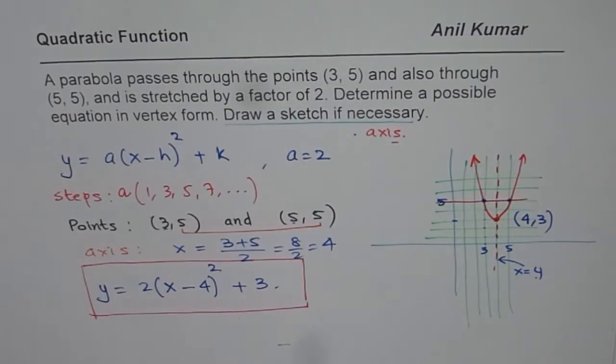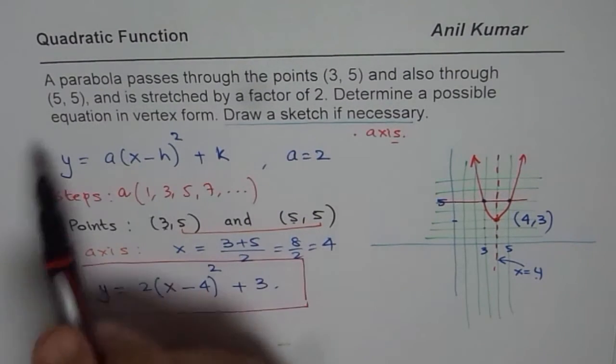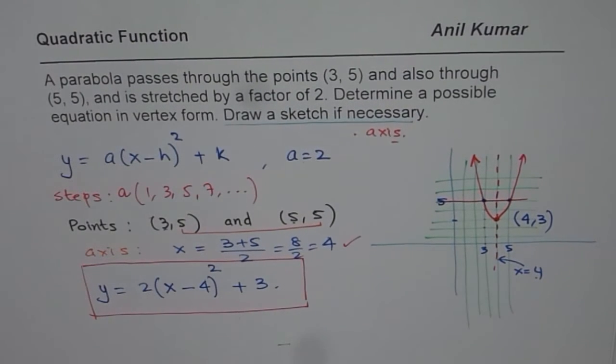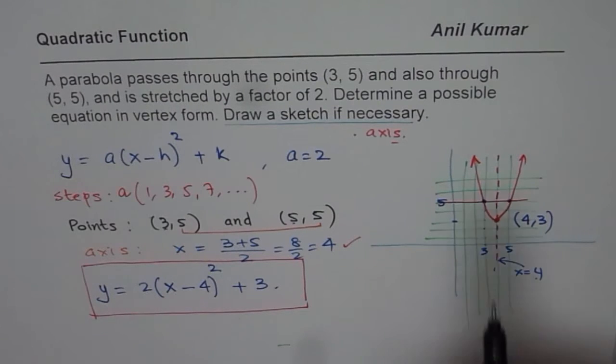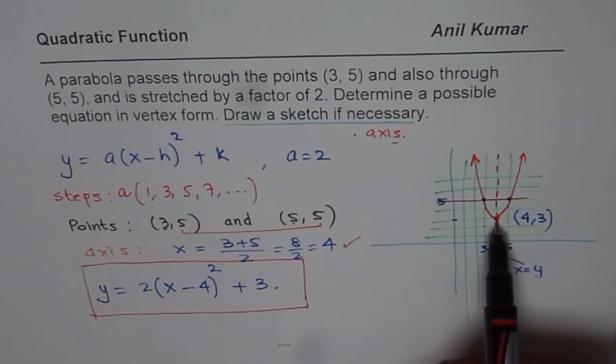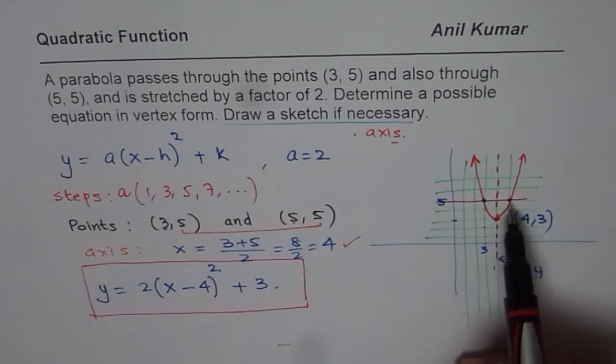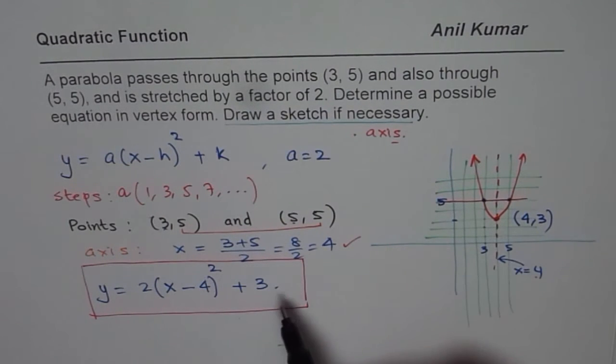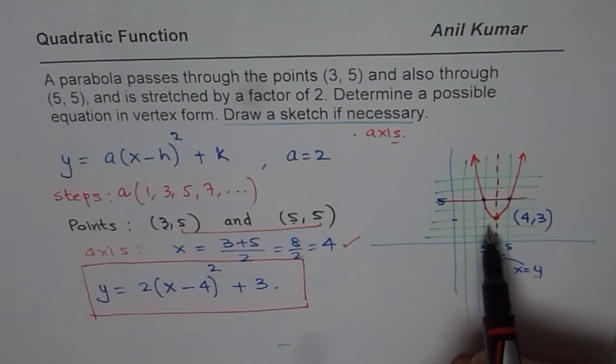So, the first step should be to find the axis. So, y values are same. So, that gives you a hint. Average of x values. This is what we did. Now, when you have the axis, you know that the vertex will be on the axis. Assume, now in this particular case, the axis was just one unit away. So, it was kind of simpler for us. Since it was one unit away and we were given the stretch factor of 2, it was kind of simpler for us to get to the equation.